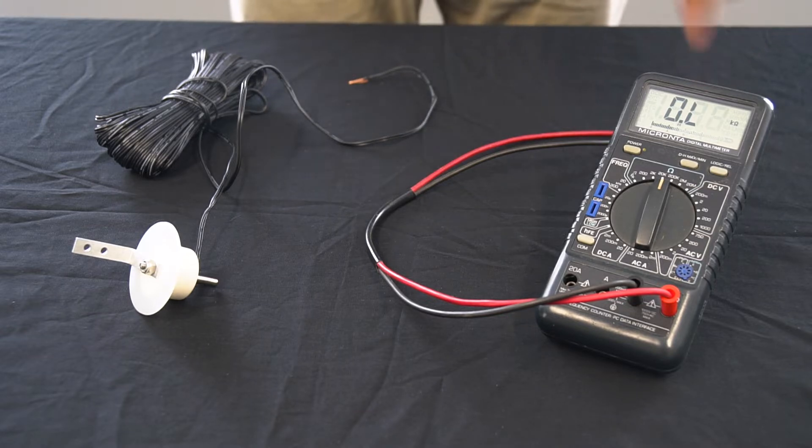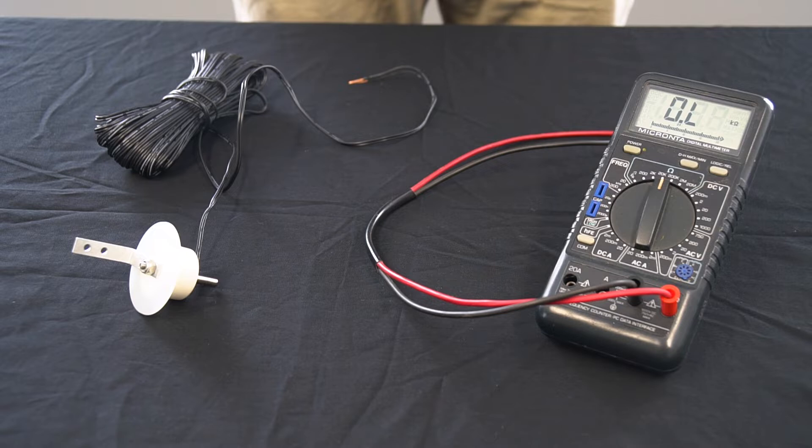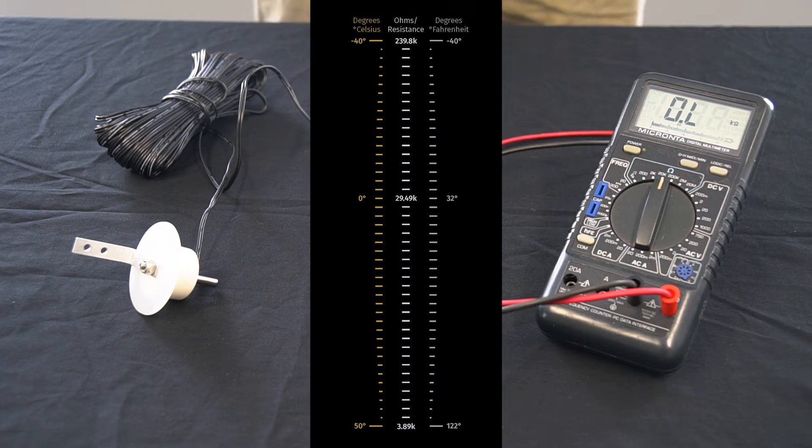You'd want a multimeter that is capable of measuring ohms. The temperature sensor is capable of readings between 240,000 ohms down to 3,900 ohms. The sensor output is inversely proportional to the temperature.